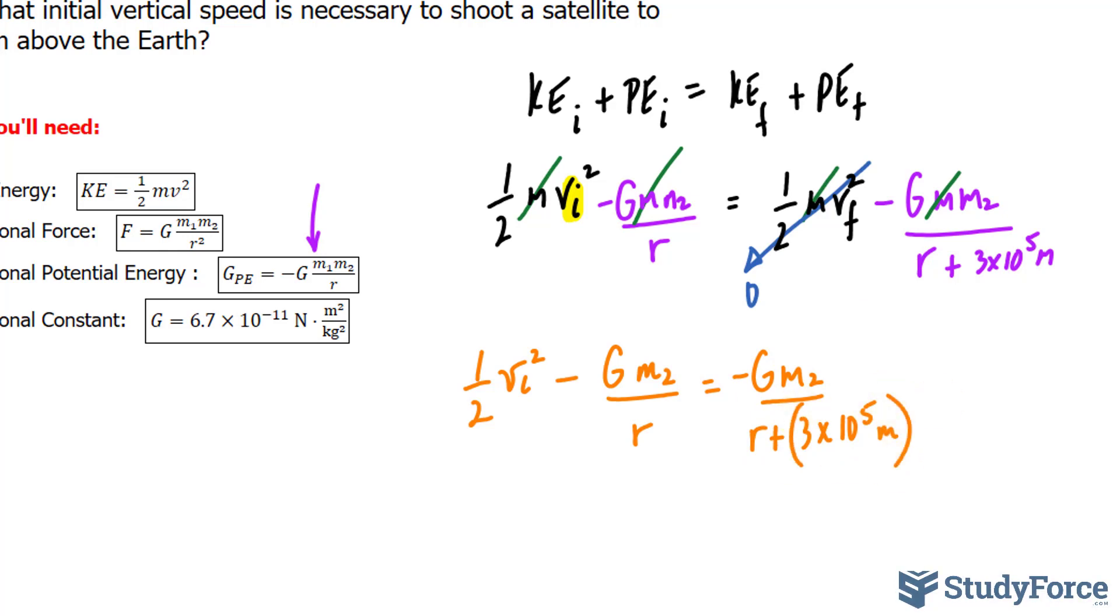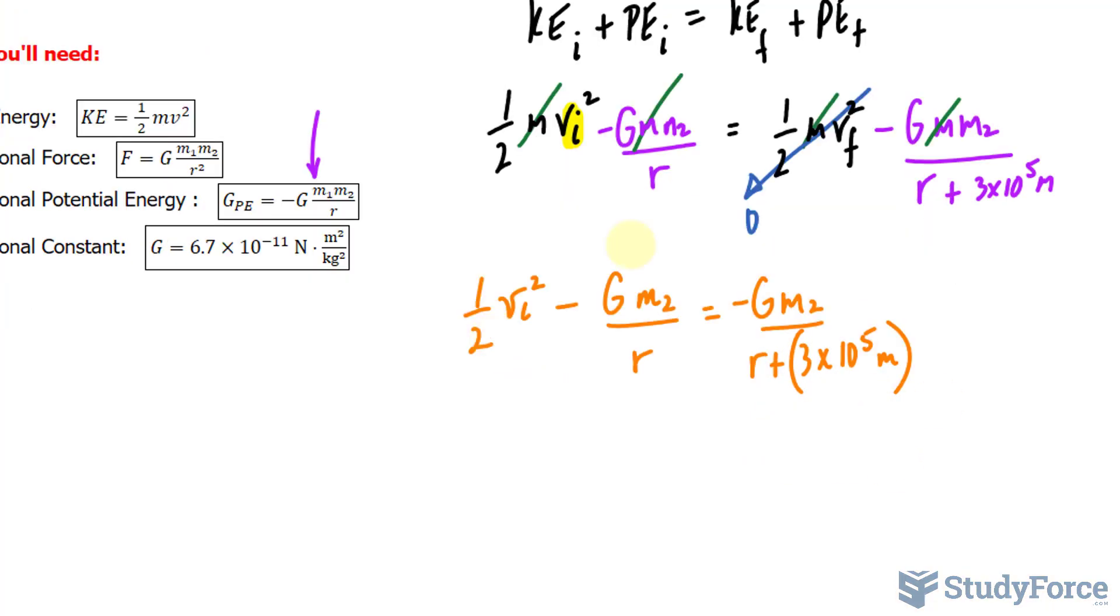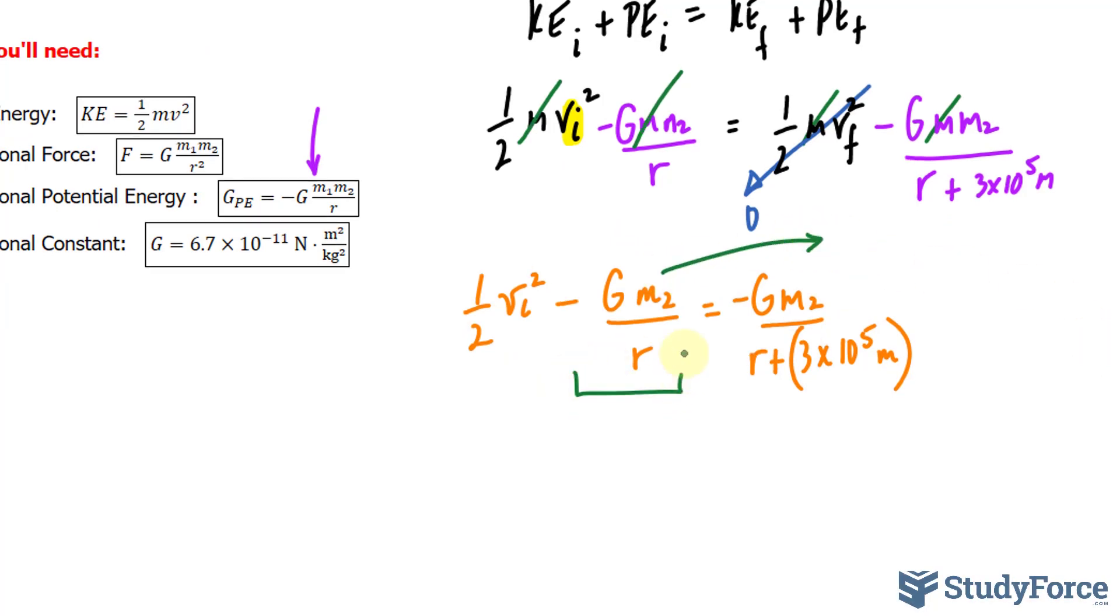So I've rewritten the equation in orange, and to solve for the initial velocity, I'll take that term over. This one right here, that's negative, and by taking it over, it becomes positive.